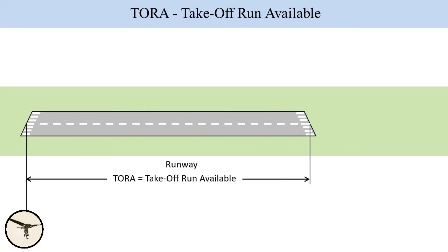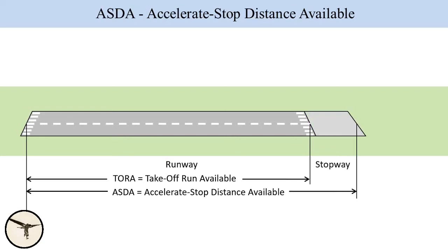We also have some definitions when it comes to the runway. TORA is the length of the runway that can be used for takeoff. ASDA — accelerate stop distance available. This is TORA plus an eventual stopway. A stopway is an extension of the runway that can be used for emergency stop. If there is no stopway, then ASDA equals TORA.